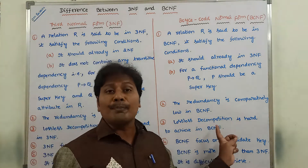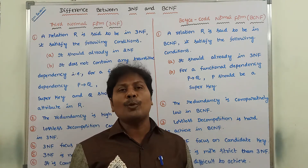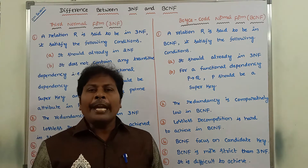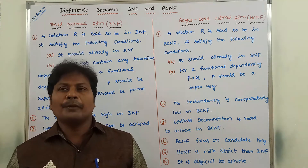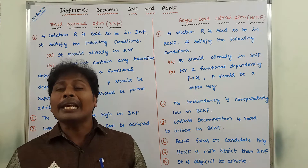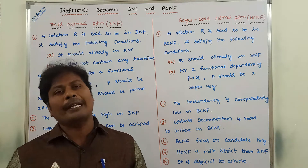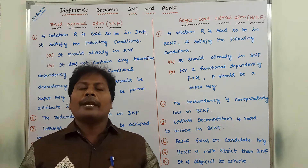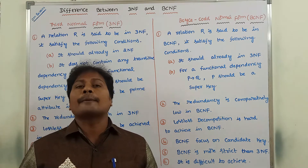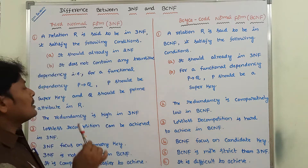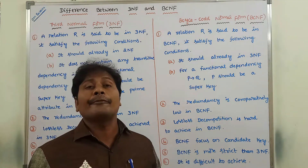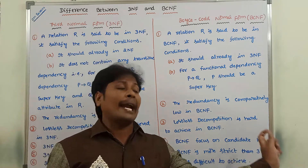In 3NF, the focus is only on the primary key. The primary key uniquely identifies each and every attribute of a relation. In 3NF, we focus only on the primary key, but in the case of BCNF, we focus only on the candidate key.